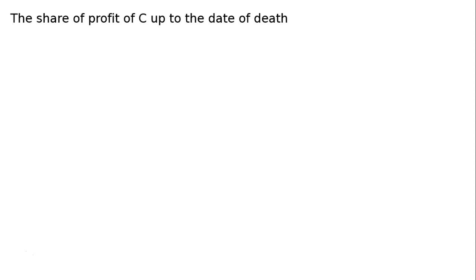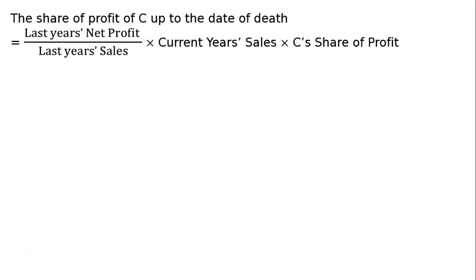Now we will calculate on the sales basis. How much is the sale and how much is the profit? The death was in the same year, so it is not on time basis. The share of profit of C up to the date of death is equal to: last year's net profit upon last year's sale, multiplied by current year's sale, multiplied by C's share of profit.